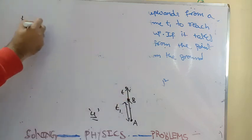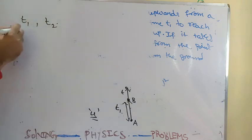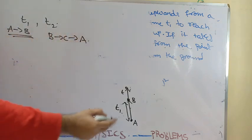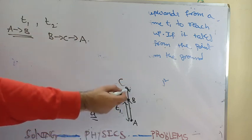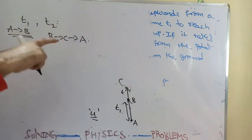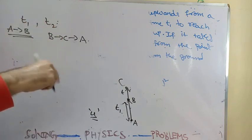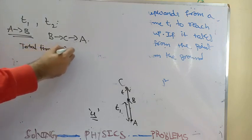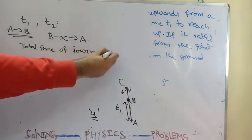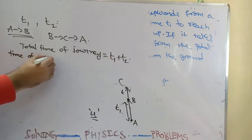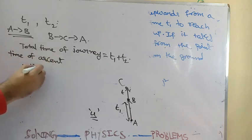To recap: A to B takes time t1, and from B to C and back to A takes time t2. So the total time of the journey is t1 plus t2. Since time of ascent equals time of descent, we can write: total time of journey is t1 plus t2.